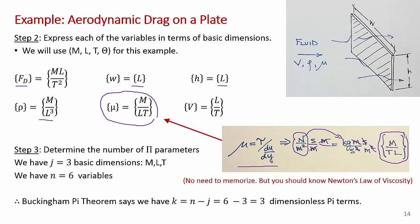Now that we've figured out the basic dimensions in all our variables, it's just a matter of counting. There are j = 3 basic dimensions in our variables: mass, length, and time. That will probably be the same in all the problems you do unless you're dealing with a non-isothermal problem involving heat transfer. We have six variables, so the Buckingham Pi theorem says we have k = n minus j = 6 minus 3 = 3 dimensionless pi terms that will describe the drag force on this plate.